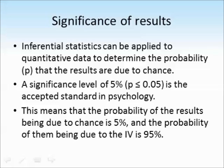You might also see a significance level of P being less than or equal to 0.01. And this means that there is a 1% probability of the results being due to chance and a 99% probability of them being due to the independent variable.